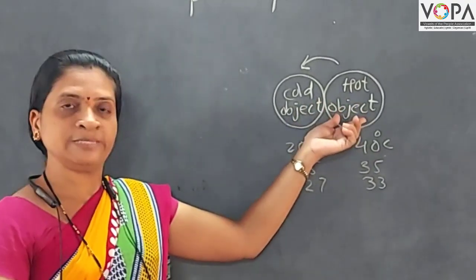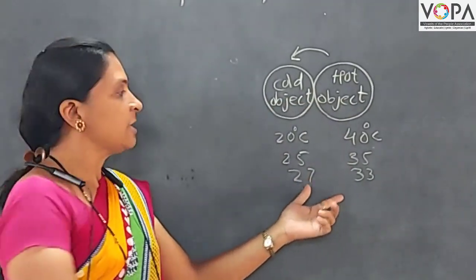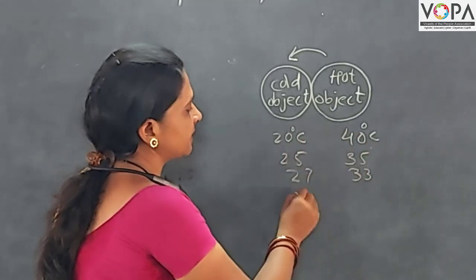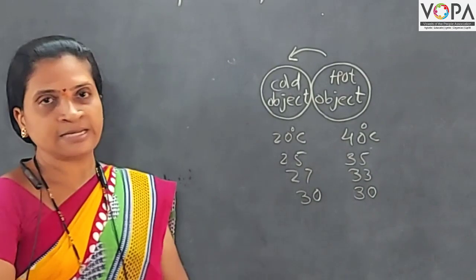The temperature of hot object and cold object is now same. So suppose we can say that here is 30 degree Celsius. And here is also 30 degree Celsius.